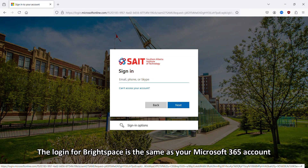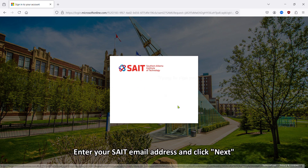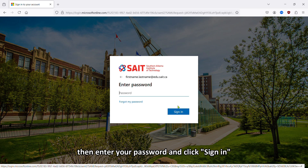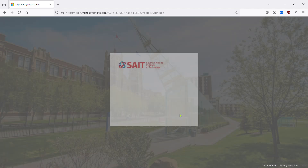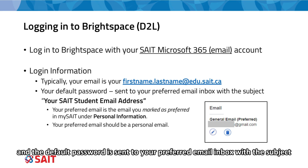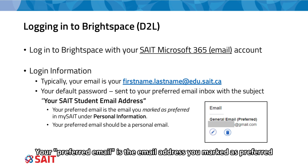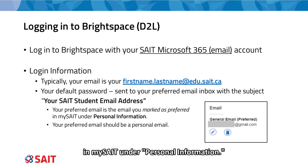The login for Brightspace is the same as your Microsoft 365 account. Enter your SAIT email address and click Next, then enter your password and click Sign In. Typically, your email address is your firstname.lastname@edu.sait.ca, and the default password is sent to your preferred email inbox with the subject your SAIT student email address. Your preferred email is the address you marked as preferred in mySAIT under Personal Information.